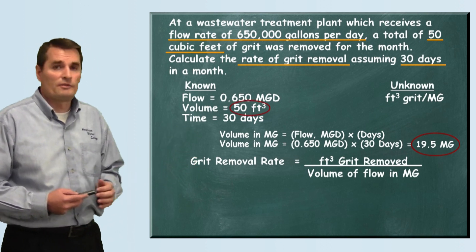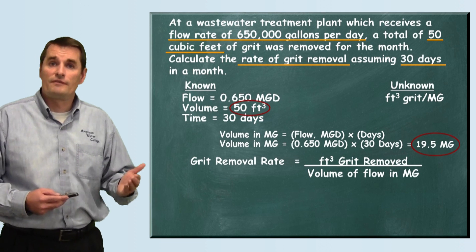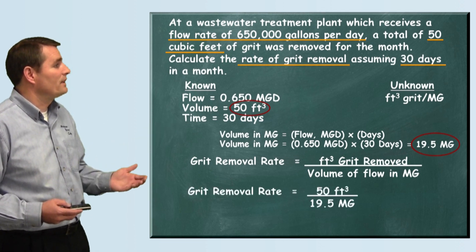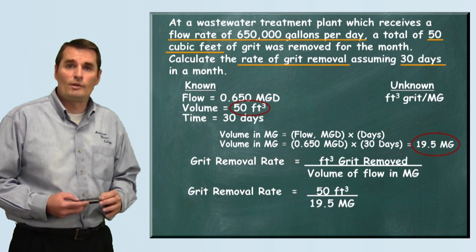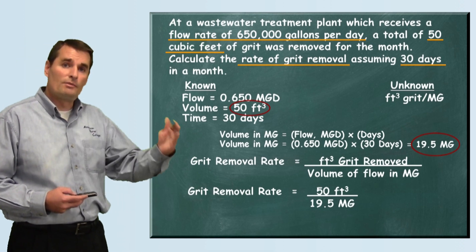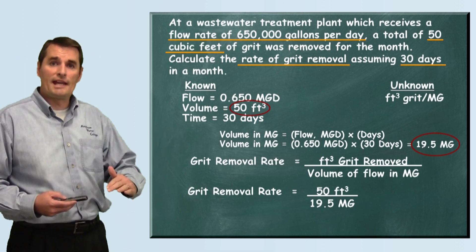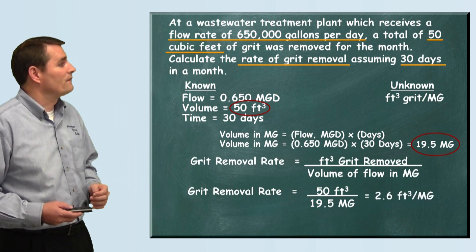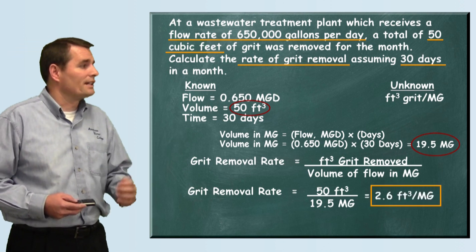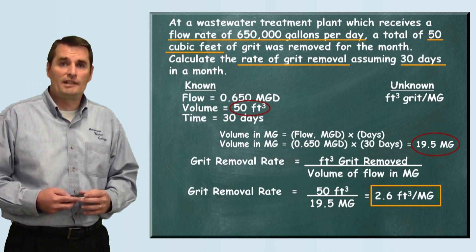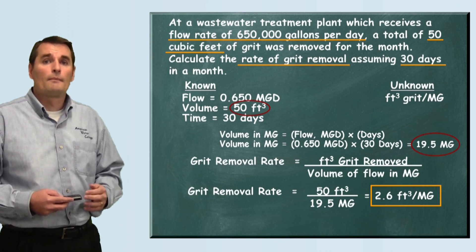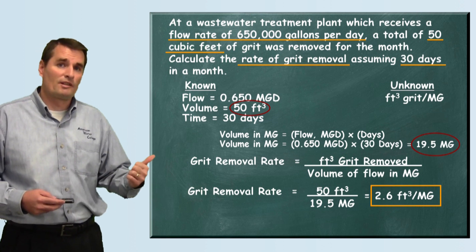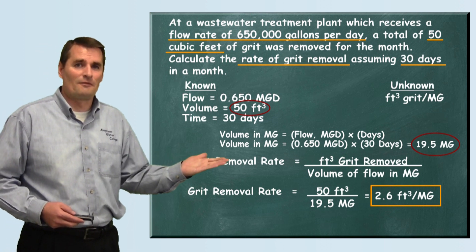They told us 50 cubic feet of grit was removed, so we put 50 cubic feet on top of 19.5 million gallons and do the math. When we divide 50 by 19.5, we get 2.6 cubic feet of grit removed per million gallons of flow. And that is how this problem is solved.